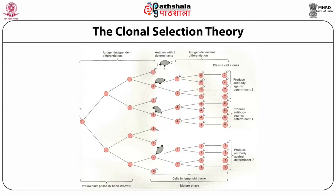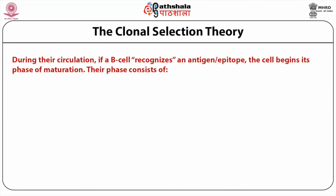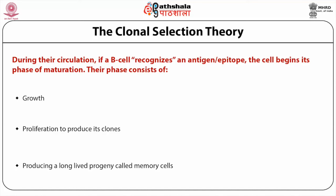Clonal selection theory is analogous to the Darwinian concept of natural selection. B cells produced by bone marrow are circulating cells of the blood and lymph, the fluid in the tissues. They have a lifetime — released to circulate and die after a while — while new cells are being released by the bone marrow all the time. During circulation, if a B cell recognizes an antigen or epitope, the cell begins maturation phases consisting of growth, proliferation to produce its clones, and then producing a long-lived progeny called memory cells.